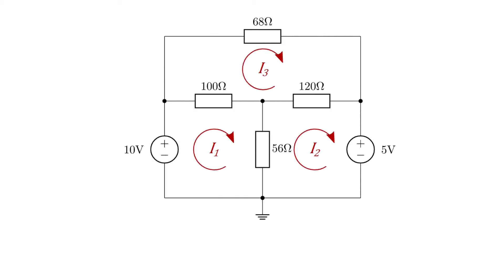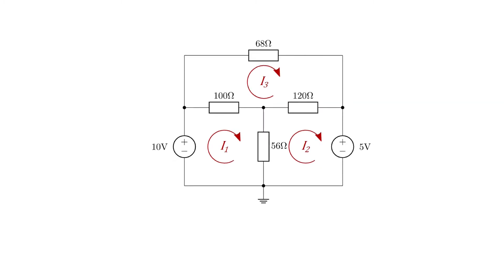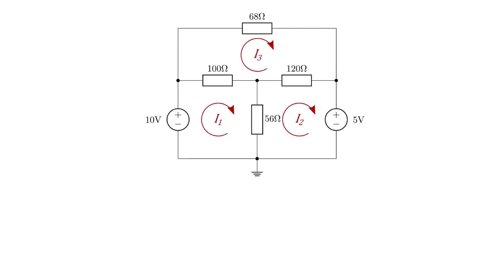Here we have a slightly more complicated circuit than our previous examples. We have three circuit panes in this particular circuit, three mesh currents, and we've called these I1, I2, and I3. We're going to follow exactly the same principles discussed in our introduction video, using the same methods to get three equations that form our system of equations.